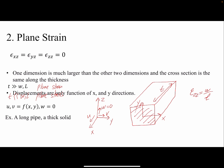Gamma XZ is simply half of the change of U with respect to Z plus the displacement in Z with respect to X. Since W is zero and U is not a function of Z, gamma XZ equals zero. Similarly, gamma YZ is zero as well.